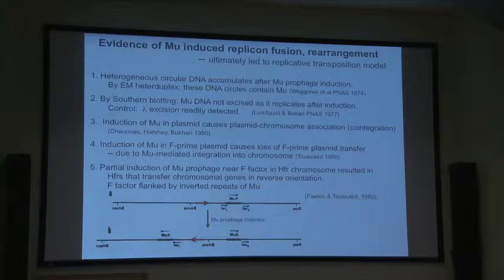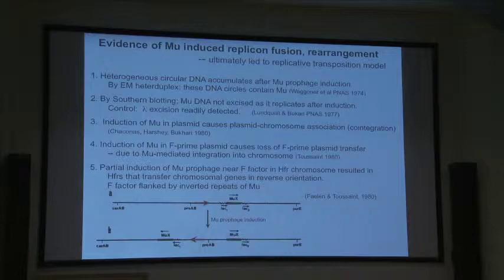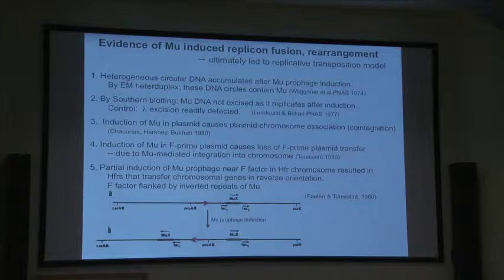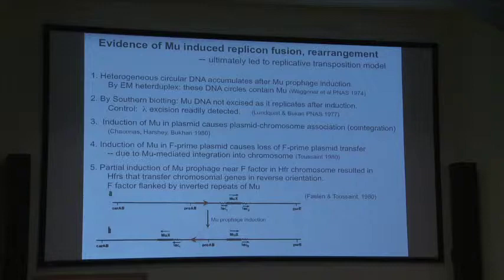Martha Howell, early on during her PhD thesis, isolated a temperature-sensitive mutant of mu's repressor. In the prophage state, mu is really controlled by a repressor — analogous in a sense to the CI repressor of phage lambda. This temperature-sensitive mutant made it relatively easy to induce phage development in mu lysogens. Amazing things began to emerge from studies of DNA found in bacterial cells after mu induction: heterogeneous circular DNAs identified by Barbara Wagoner and colleagues in the early 1970s, and by southern blotting — a really important experiment by Ahmed Bukhari and Elizabeth Lundqvist — it looked like mu never excised as it replicates after induction. It's always stuck in the bacterial chromosome, whereas lambda excision was easily detected.